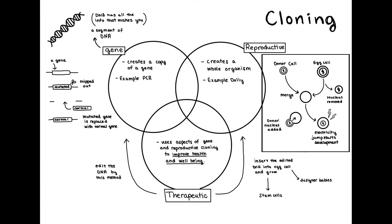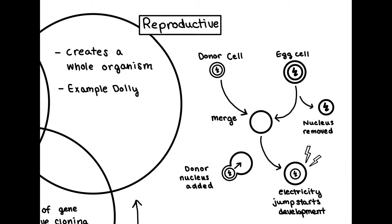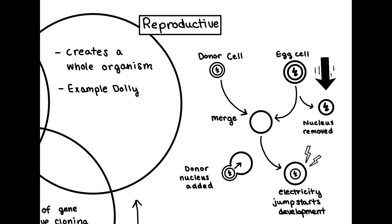Let's start by talking about reproductive cloning. Reproductive cloning is the main part of cloning that makes it so controversial. The end result is a fully developed organism that is an exact copy of the original. If we zoom in on this part of my presentation, you can see the schematic I've drawn. Reproductive cloning begins with a donor cell and an egg cell. The donor cell can be any cell from the organism. The nucleus from the egg cell is removed, and the two cell membranes are then merged, causing the donor nucleus to act as the new nucleus.